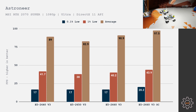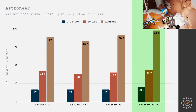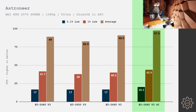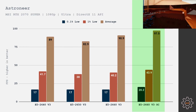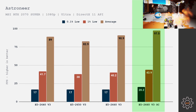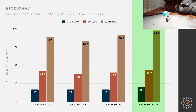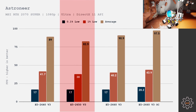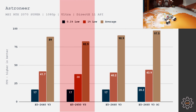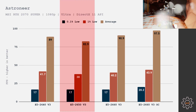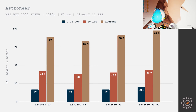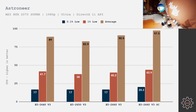Astroneer is not a very optimized game and appears to be heavily memory bandwidth and latency limited. The overclocked 2660 leads with 20 fps 0.1% low, while all other configs have just 17. It also achieves 43 fps 1% low and 97 fps average, compared to 40 fps 1% low and 90 fps average for the 2640 and non-overclocked 2660. The 2650 sits at the bottom with 17 fps 0.1% low, 38 fps 1% low, and 82 fps average — further proof that the 2650 is not a gaming CPU.